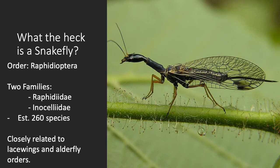Snake flies get their name from their elongated and surprisingly mobile prothorax. That prothorax is the segment right below the head in the image you're seeing there, which is key in identifying these species from similar insects. They do have compound eyes like most other insects, but if you look at their forelimbs, you'll notice they aren't specialized like a praying mantis might be. Again, this is very helpful in identifying members of this order.